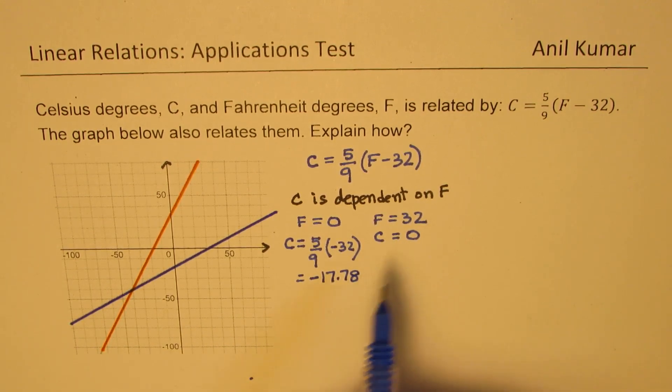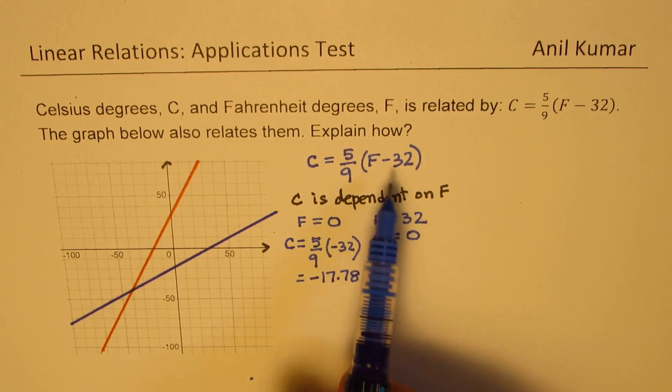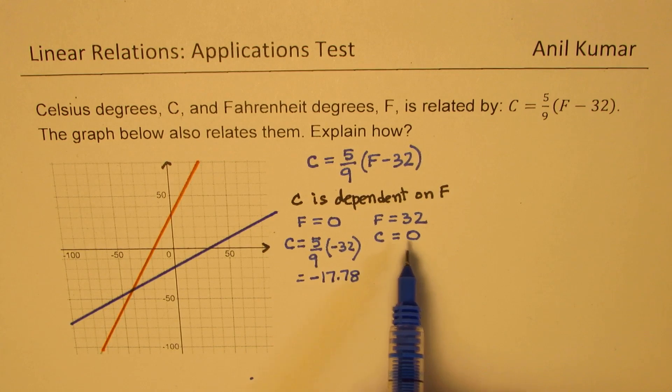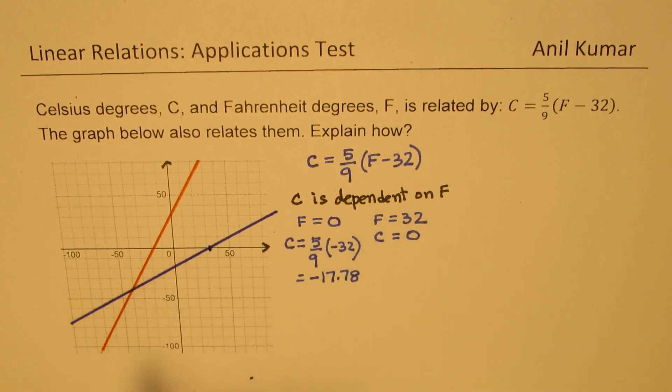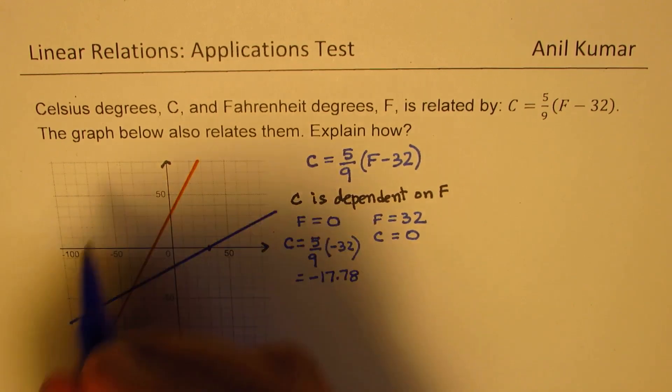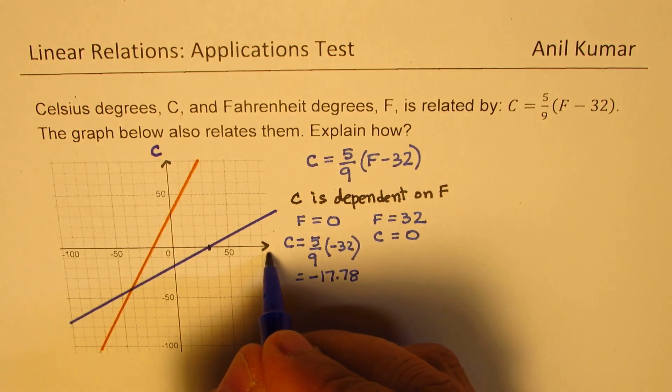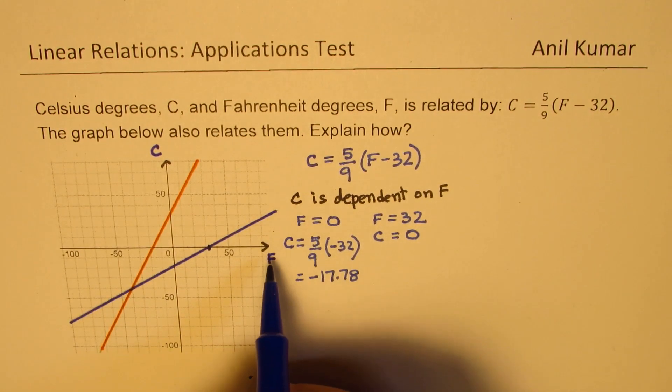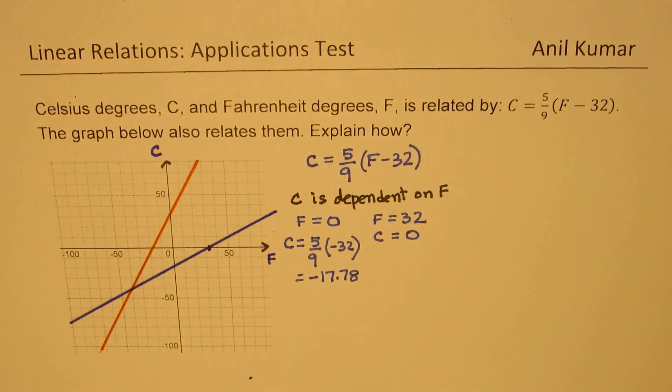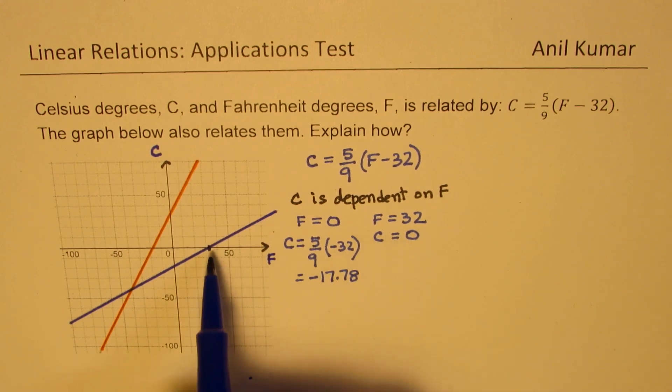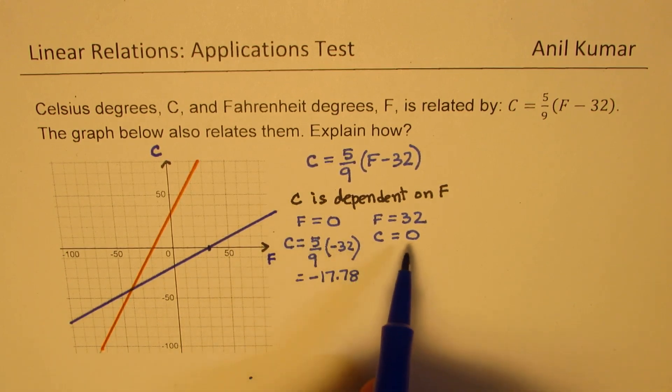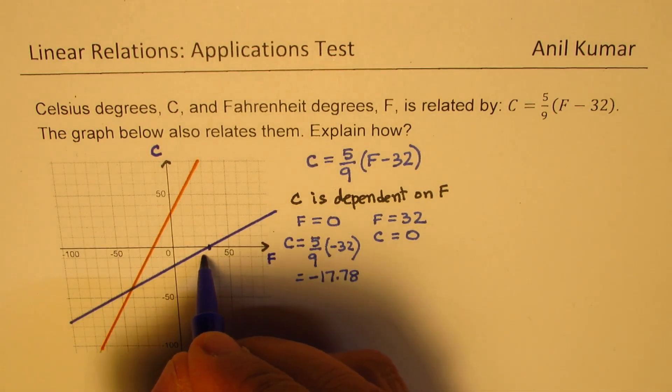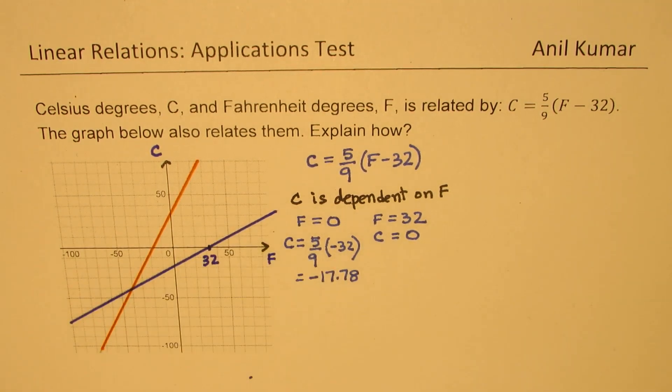Looking into these two values, when F value is 32, C is 0. It seems very clear that the line, which is this blue line, represents our graph C equals to 5 over 9, F minus 32. In blue, let me write down here that C is on the y-axis and F is on the x-axis. The x-intercept happens, that means C is 0, when F is equal to 32. This point here represents 32 degrees Fahrenheit.